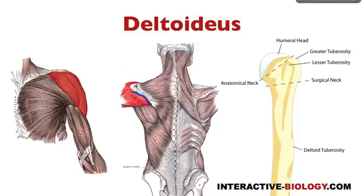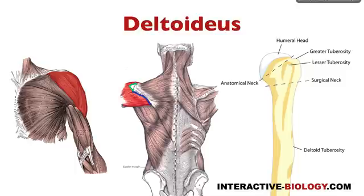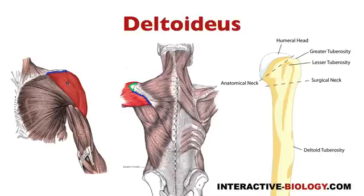And then from there, not the medial acromion like the trapezius, but the lateral margin of the acromion — the lateral acromion. And then on the other side, that's going to be the lateral third of the anterior clavicle. Remember with the trapezius that was the posterior clavicle, but here we're dealing with the lateral third of the anterior clavicle.